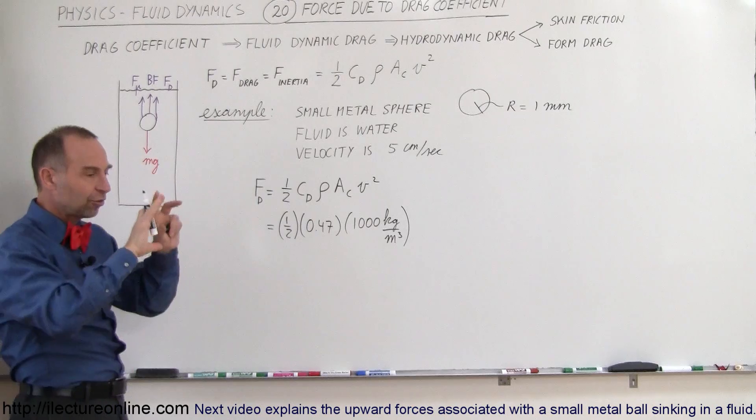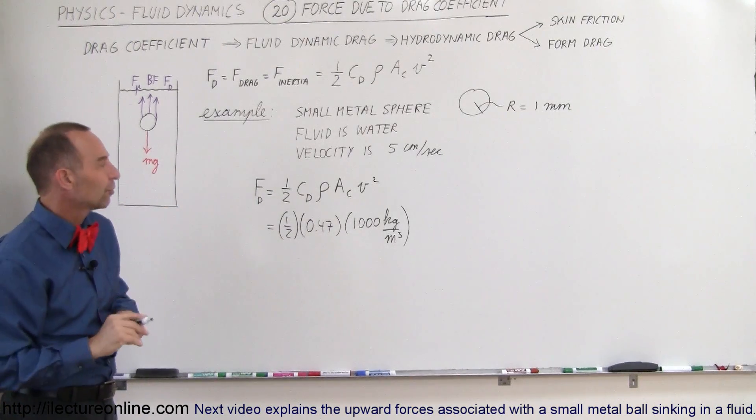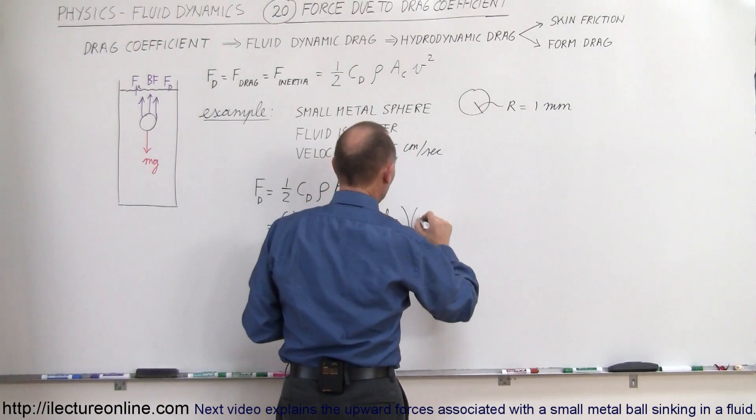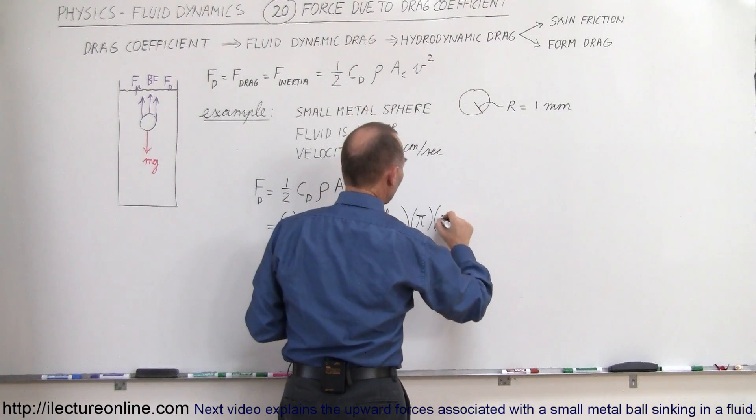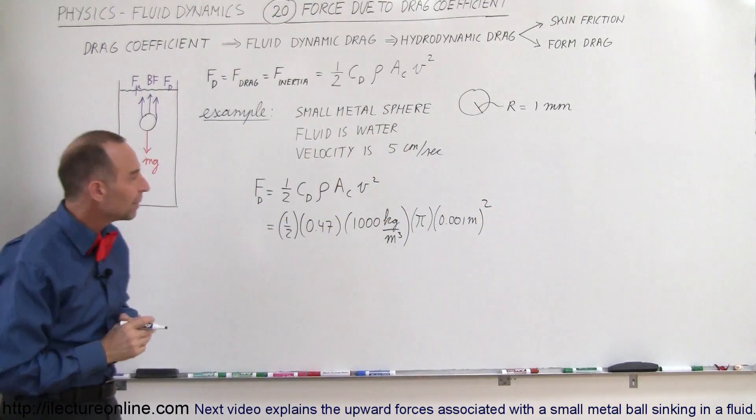The cross sectional area, well let's see, it's a sphere, so it's the cross section of a sphere, which is the area of a circle. That would be pi times r squared, and r is 0.001 meters, so we have to square that. 1 millimeter is 1/1000 of a meter.